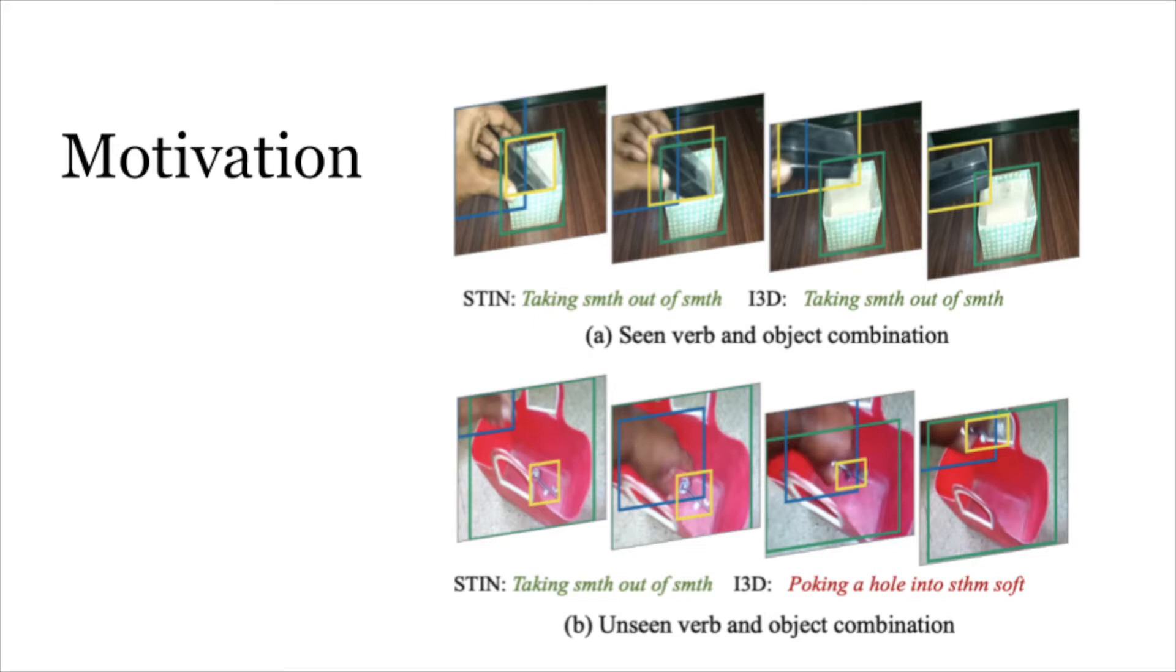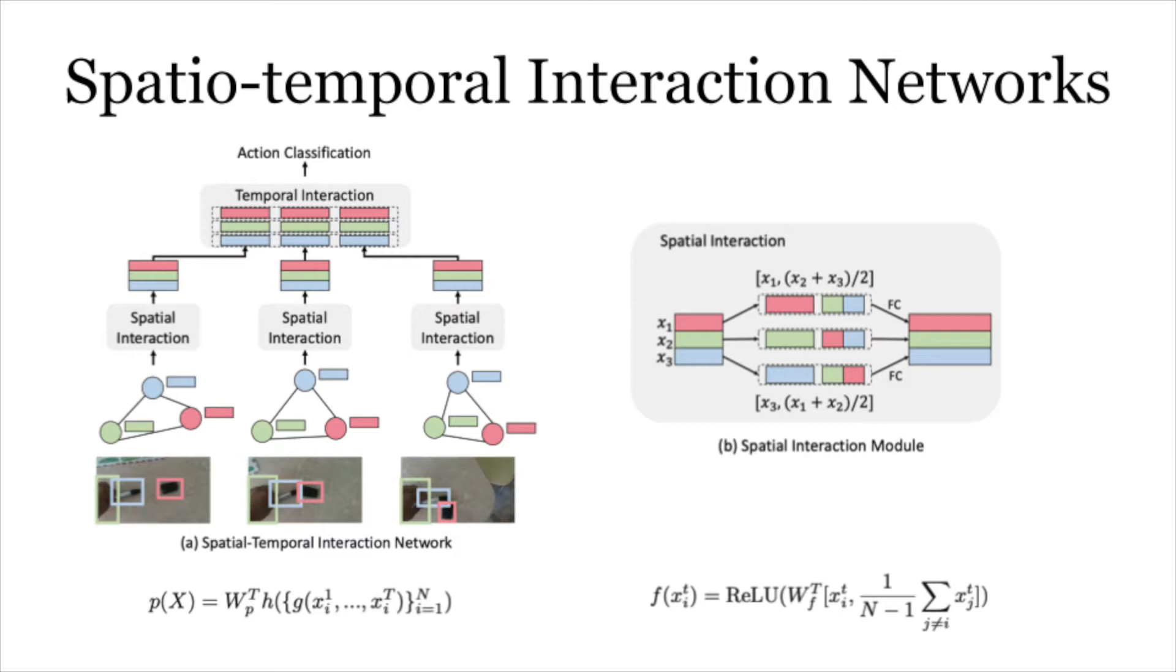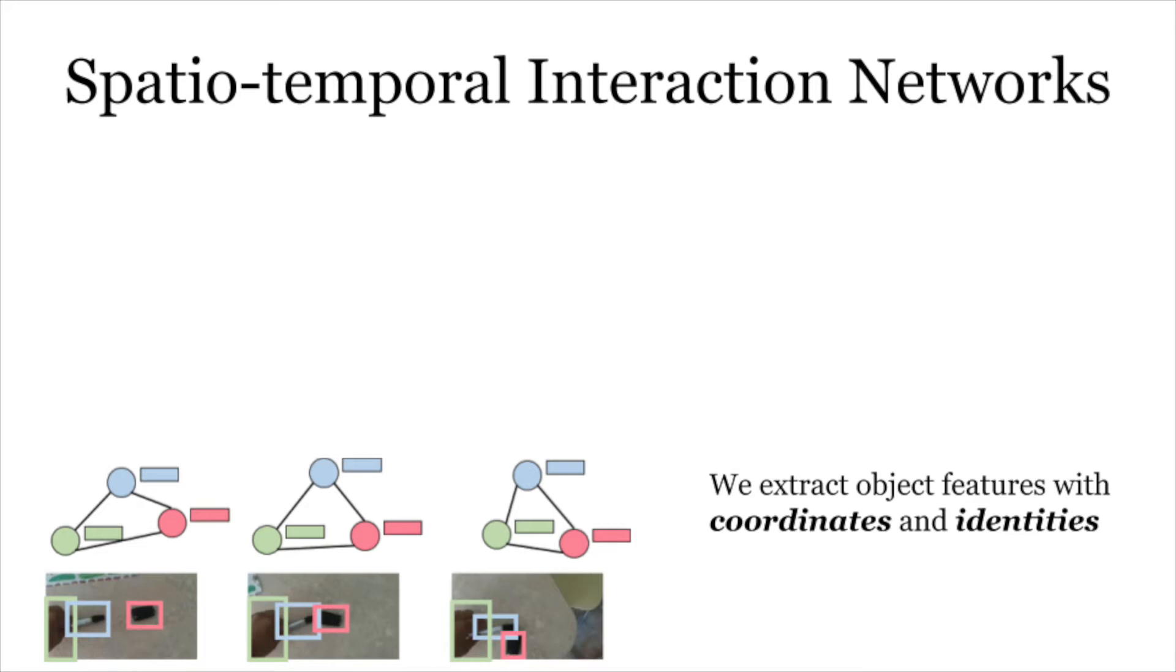In this paper we study the compositionality of action by looking into the dynamics of subject-object interactions. We propose a novel spatial-temporal interaction network which can explicitly reason about the geometric relations between constituent objects and an agent performing an action.